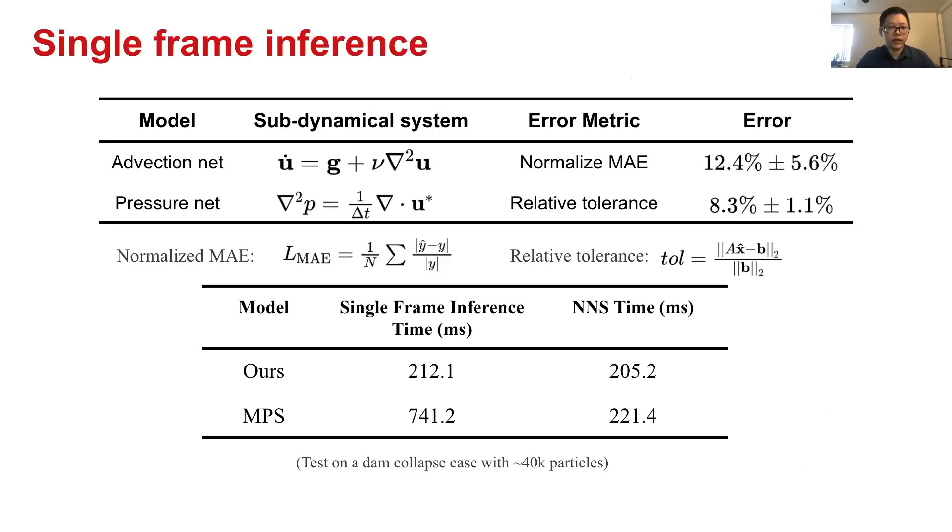We first evaluate the model performance on its single frame inference. For advection net, we challenge it by applying it with different sets of material parameters. That is, we use different gravity force and different viscosity parameters. Viscosity parameters can range from 0.1 to 0.001, very small. With this large range of variation on the parameters, the advection net is still able to predict a reasonably low error on the acceleration.